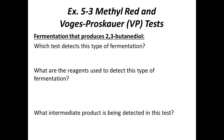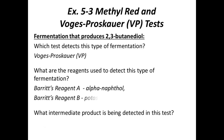Which test detects 2,3-butanol fermentation? The Voges–Proskauer, the VP test. The reagents used were Barritt's reagent A — alpha-naphthol — and Barritt's reagent B — potassium hydroxide, a strong base. The intermediate product we detected the presence of was acetoin. The order you add the reagents matters, which is why they're labeled A and B, and mixing was very important.